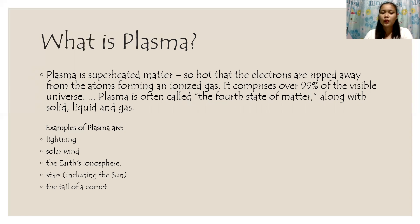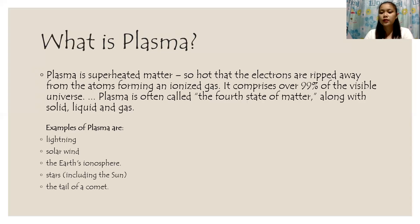What is plasma? Plasma is superheated matter, so hot that the electrons are ripped away from the atoms forming an ionized gas. It comprises over 99% of the visible universe. Plasma is often called the fourth state of matter, along with solid.